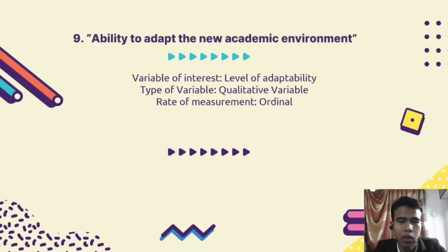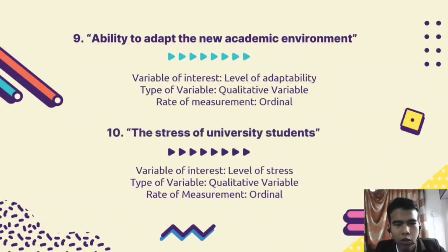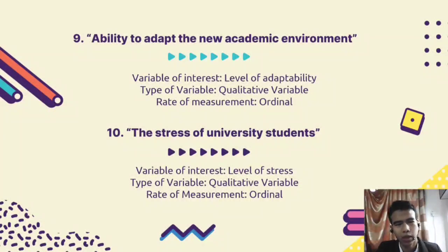Variable 9 is the ability to adapt to the new academic environment. We will find out the level of adaptability for students to adapt to the new academic environment, especially during the pandemic. And last but not least, variable 10 is the stress of university students — we will find out the level of stress of students during online learning. Both of these variables are under ordinal qualitative variable.